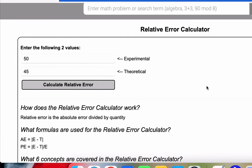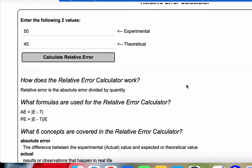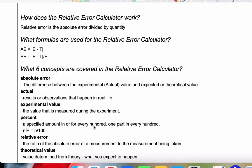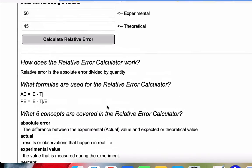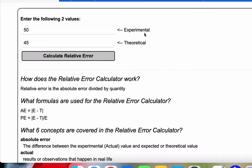All right, in this video, we're going to talk about relative error. So relative error is the ratio of the absolute error of a measurement to the measurement being taken. And when we say measurement being taken, that's experimental or actual.